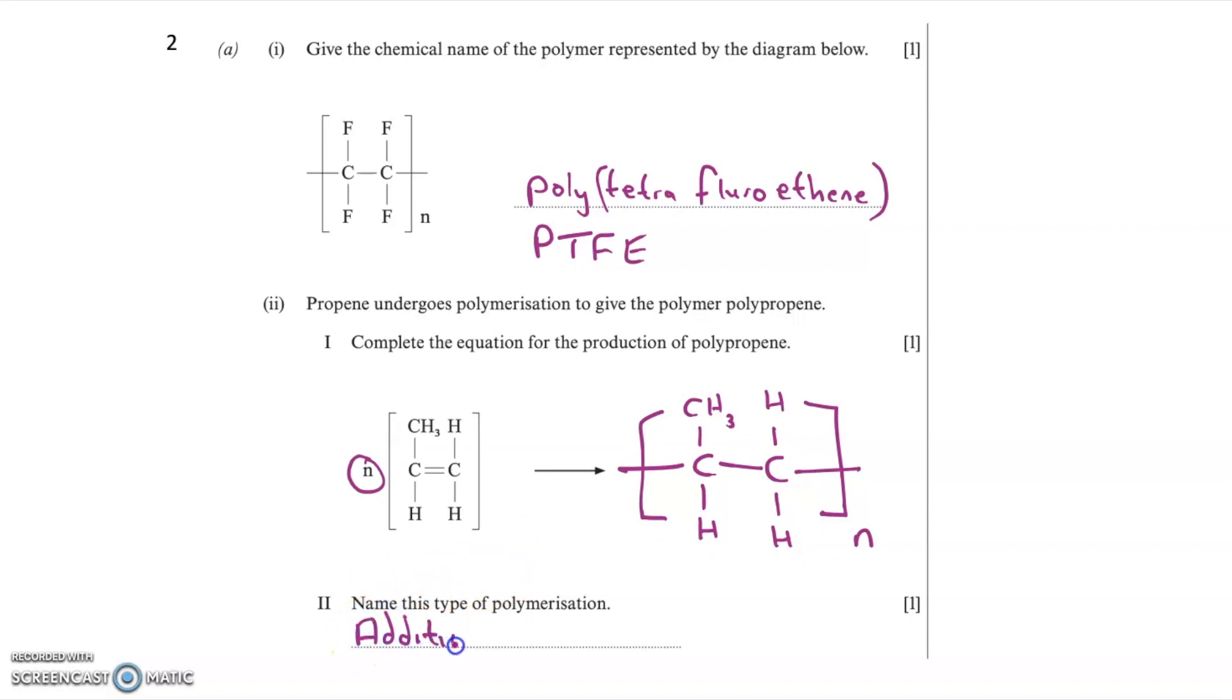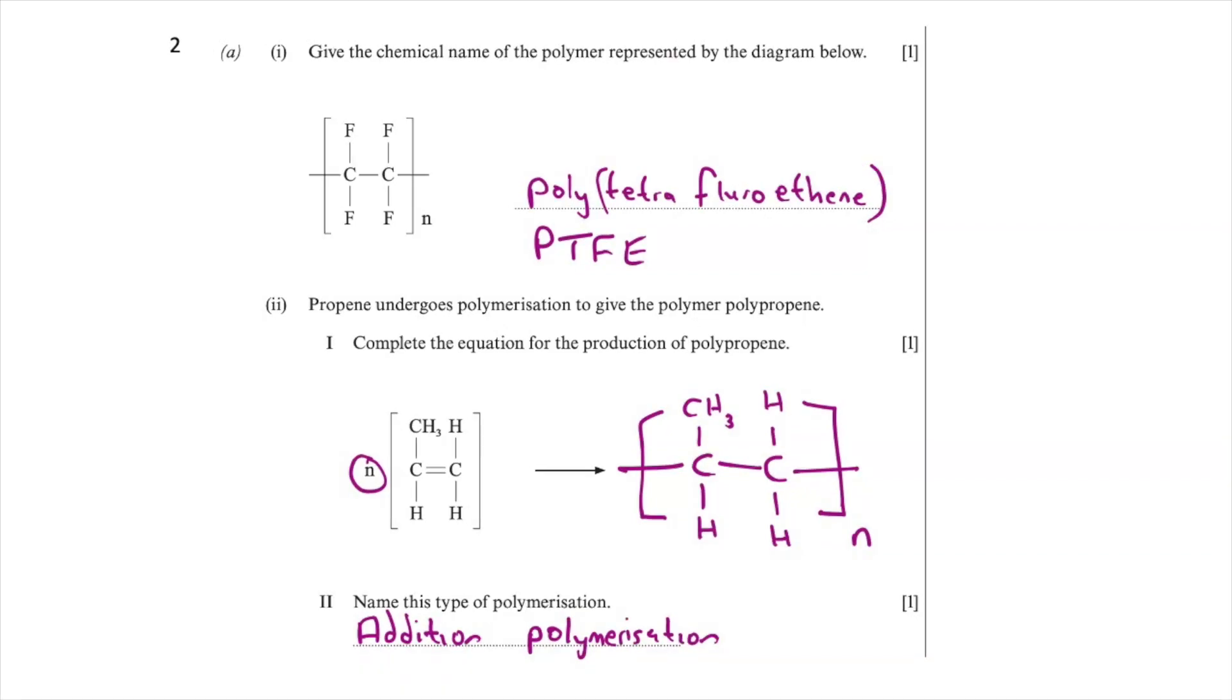And I have to remember to put the N because there's N propene molecules. So there's one mark if you draw the repeating unit correctly here. And the type of polymerization is addition polymerization, because alkenes undergo addition reactions. One mark if you said addition as the type of polymerization.